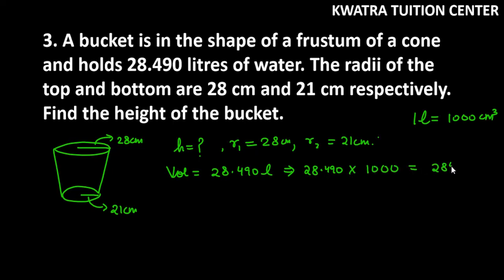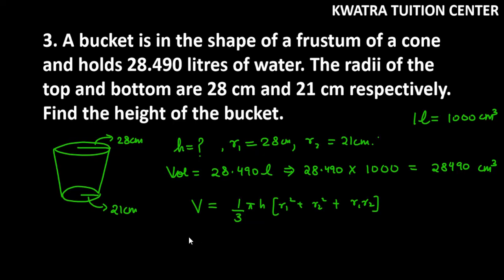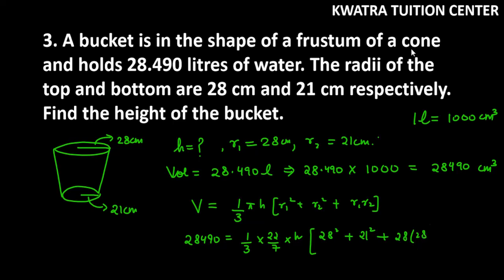The final volume is 28,490 cm³. The volume of a frustum is (1/3)πh(R1² + R2² + R1·R2). Substituting: volume is 28,490, π is 22/7, H is unknown. We compute 28 squared, 21 squared, and 28 times 21.